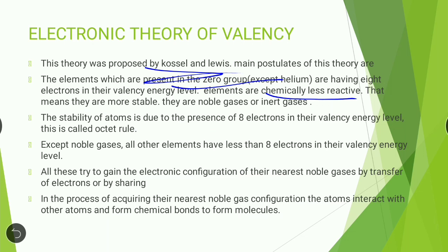These zero group elements are called noble gases or inert gases. The stability of atoms is due to the presence of eight electrons in their valency shell. Except for noble gases, all other elements have fewer than eight electrons in their outermost orbit and try to gain the electronic configuration of their nearest noble gas.